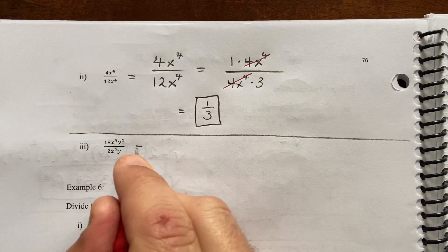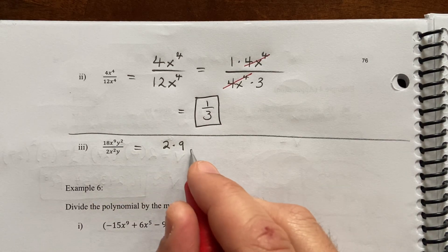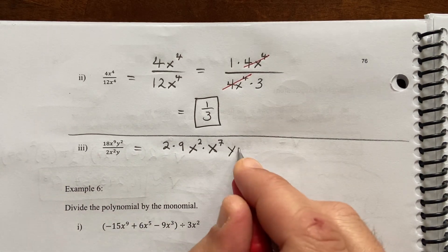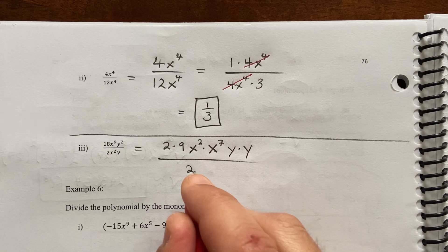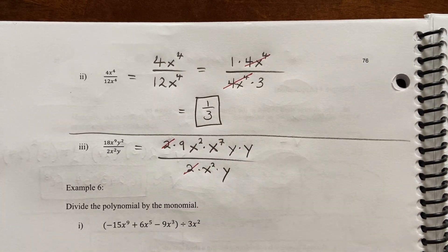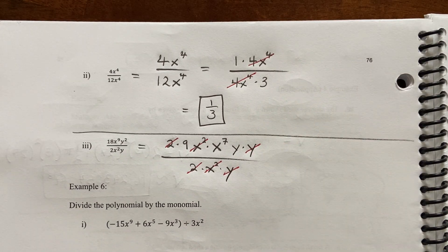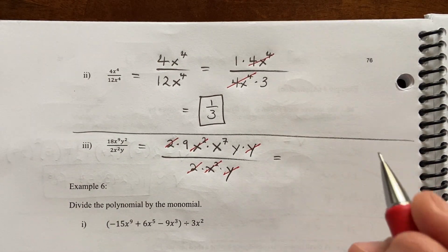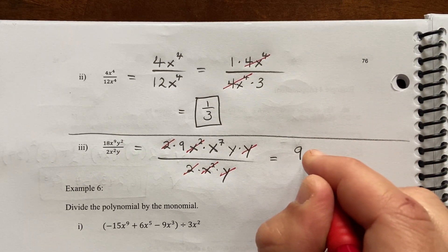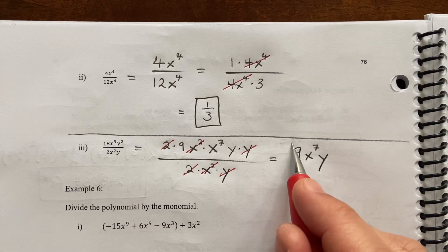Part 3: I have an 18, which I can think of as 2 times 9. I have x to the ninth, which I can think of as x squared times x to the seventh. And a y squared, which I can think of as y times y. Now I have some commonalities — the 2s, x squareds, and one copy of y cancel, leaving 9x to the seventh y as the fully simplified form.